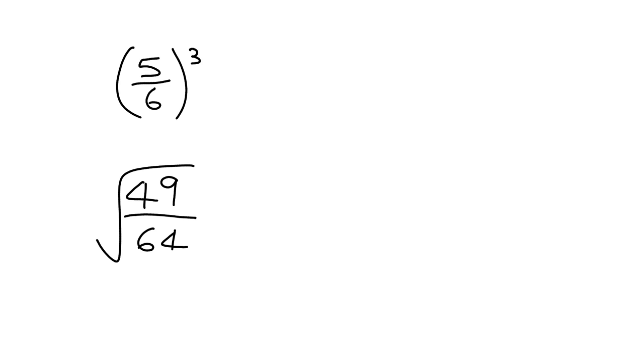So nothing new here. If you see something like this, 5 over 6 cubed, well it just means exactly what you think, right? It's 5 over 6 times 5 over 6 times 5 over 6. Well, remember with fractions, you just multiply the numerators and then multiply the denominators.